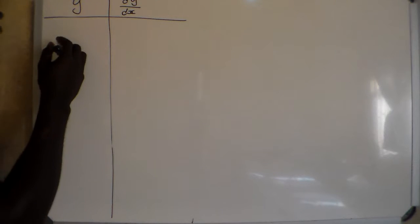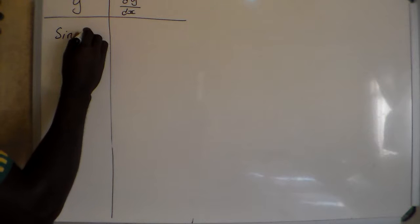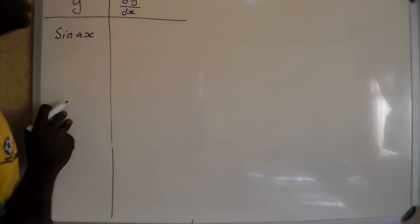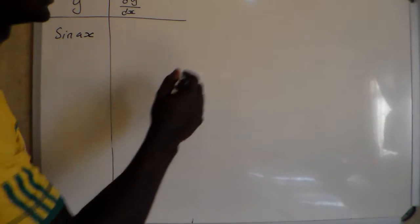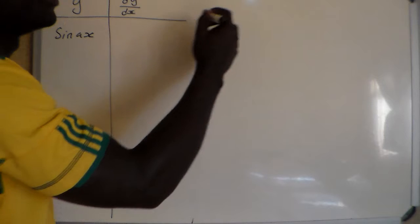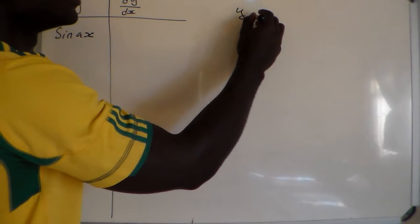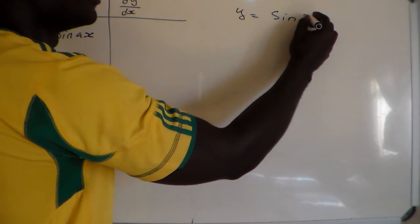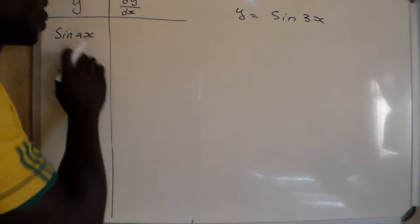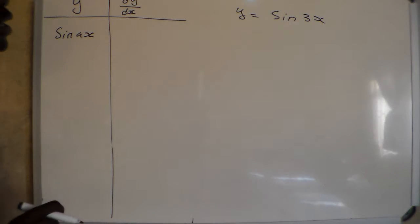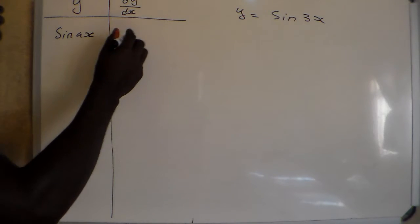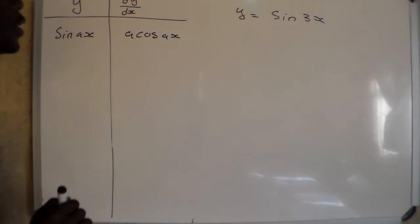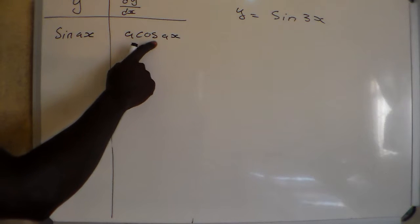So let's say that we have sine AX. If we have to find the derivative of sine AX, that means A is a constant number. The derivative of sine AX is equal to A·cos(AX). So the derivative of sine is equal to cosine, and then we multiply by the constant number A.